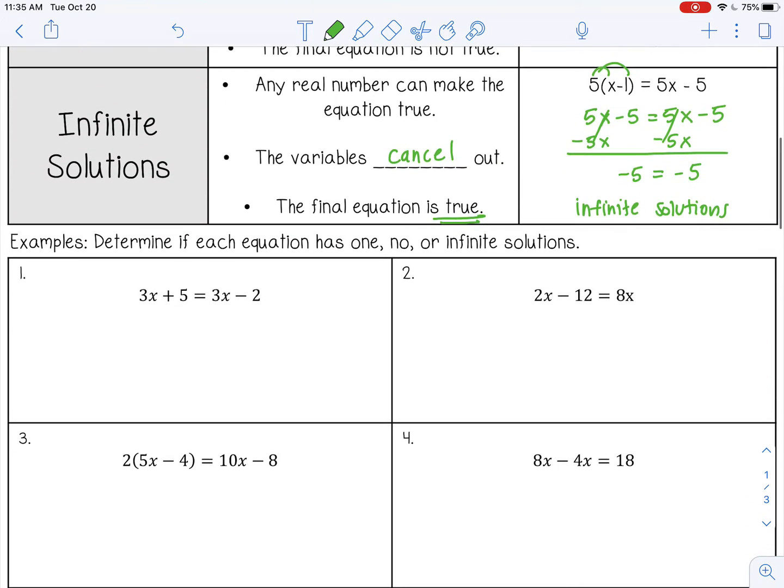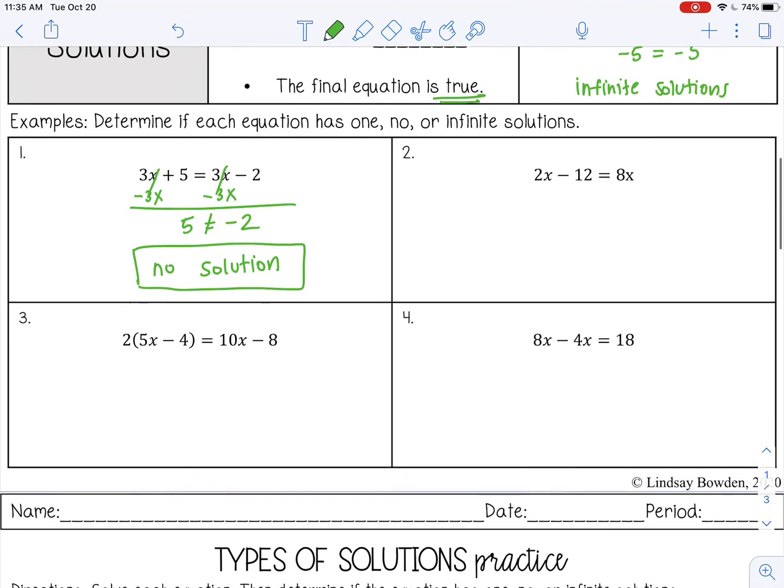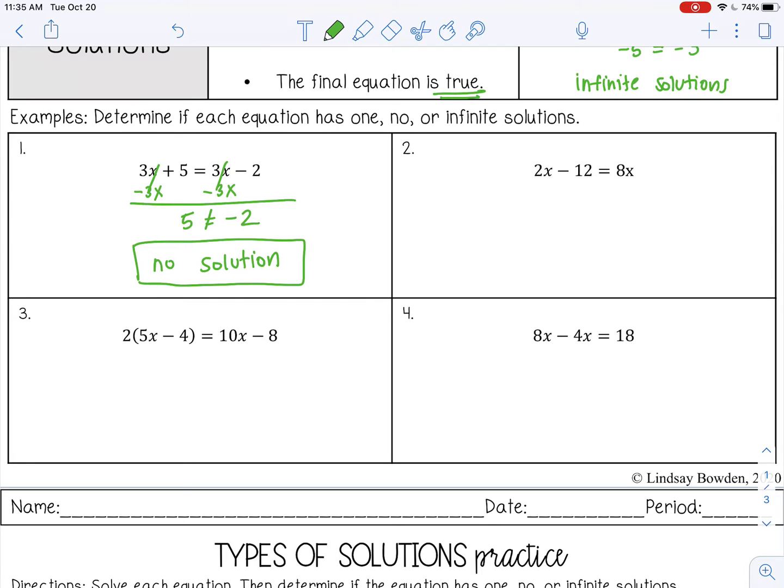All right, let's try some examples. So number one, I'm going to subtract 3x from both sides. And I'm left with 5 equals negative 2. So the variables cancel, but the final equation is not true. So that means there's going to be no solution. Nothing that I plug in or substitute in for x will make that equation true.